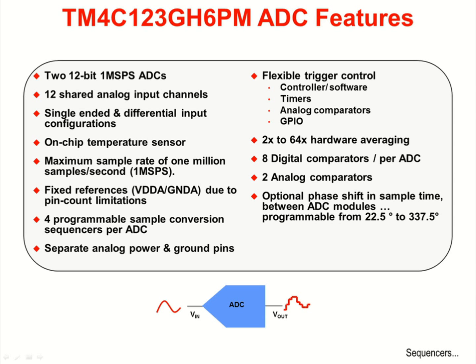Each ADC has 8 digital comparators, for a total of 16. There are two analog comparators for the device. Optionally, you can phase shift the sample time between the ADC modules between 22.5 and 337.5 degrees.